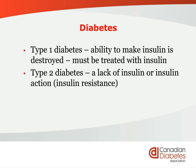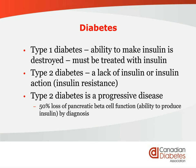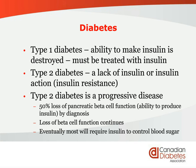Type 2 diabetes is a progressive disease. By the time you are diagnosed with type 2 diabetes, you've already lost 50% of the ability to produce insulin from your pancreas, and that continues. Eventually most people do require insulin in some form to control their blood sugar.